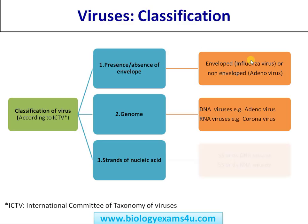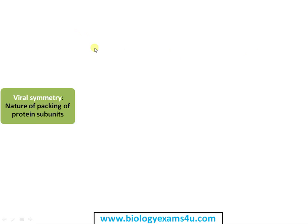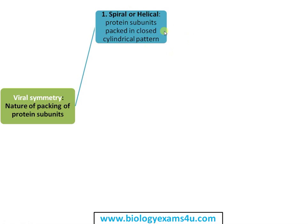Symmetry is the nature of packaging of protein subunits, or capsid orientation. It can be spiral or helical, where protein subunits are packed in a closed cylindrical pattern. This is TMV, or tobacco mosaic virus — the first identified virus and the first crystallized virus. Here there is an axial hole and the capsid is arranged helically, which is why it is called a helical virus.